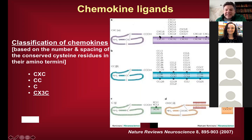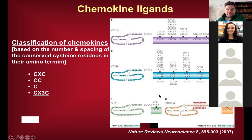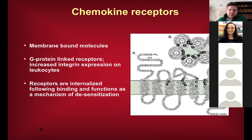The CXC classification is one of the most common, and CC is the second most common. If you do inflammatory arrays, sequencing, or nanostring for inflammatory markers under an inflammatory condition, you can see a ton of these different chemokine ligands in the brain or spinal cord.